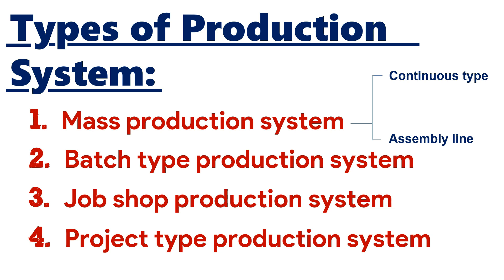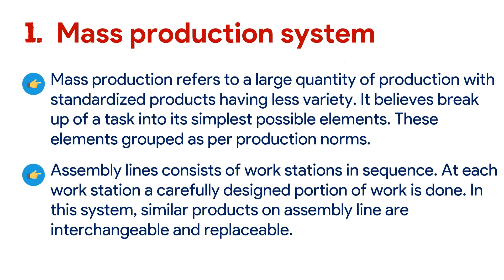Let's start with our first type, the mass production system. Mass production refers to a large quantity of production with standardized products having less variety. It involves breaking up a task into its simplest possible elements, which are then grouped as per the production norms.